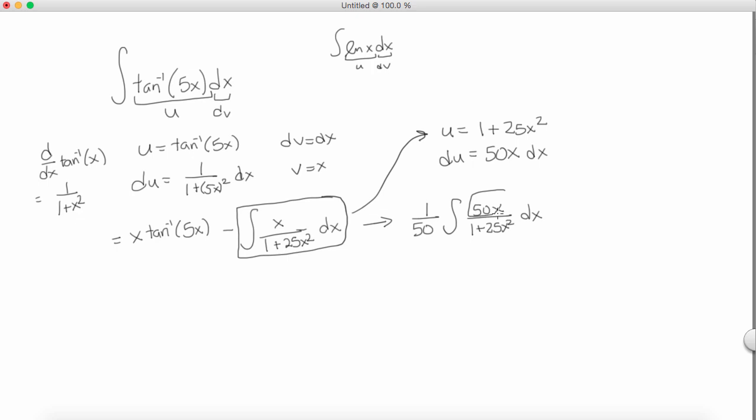And now what we have here, this right here is du, and this on the bottom is u. So, what we end up with is 1 over 50, the integral of 1 over u du.